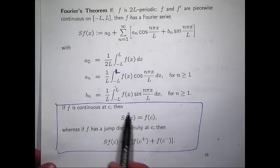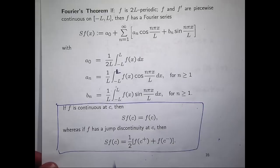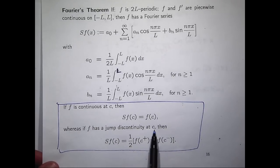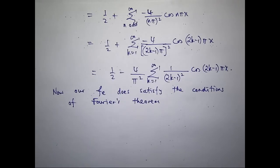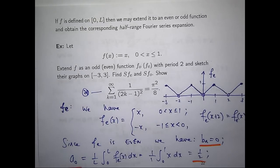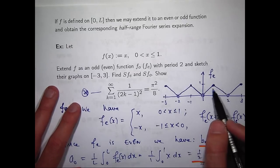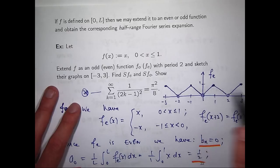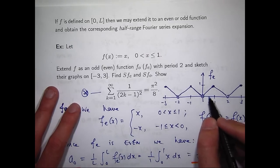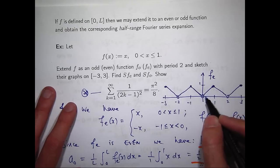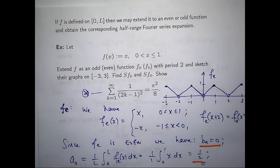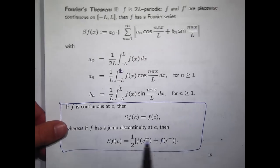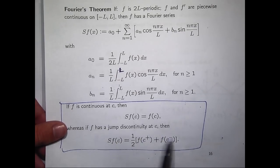Hence, if our original function is continuous at a point, the value of the Fourier series and the function agree at that point. Whereas if there's a jump discontinuity, the Fourier series equals the average of the left-hand and right-hand limits. Let's look at what's happening near x = 0. As we approach 0 from the right, the curve approaches 0, and from the left it also approaches 0. So the right-hand limit is 0 and the left-hand limit is 0, and the average is 0. By Fourier's theorem, the value of the Fourier series at 0 must equal 0.